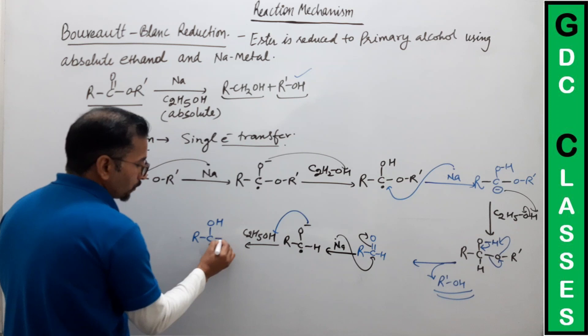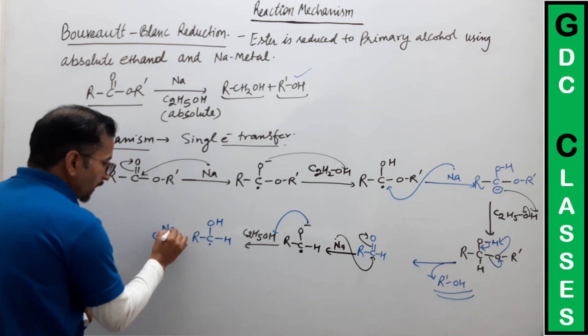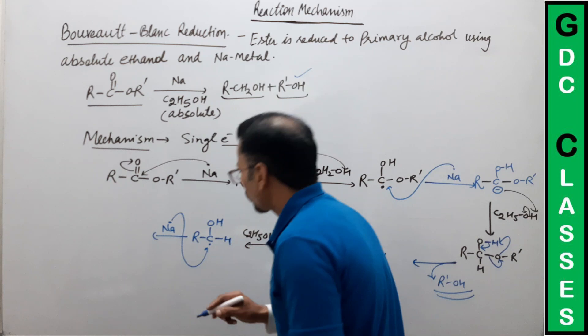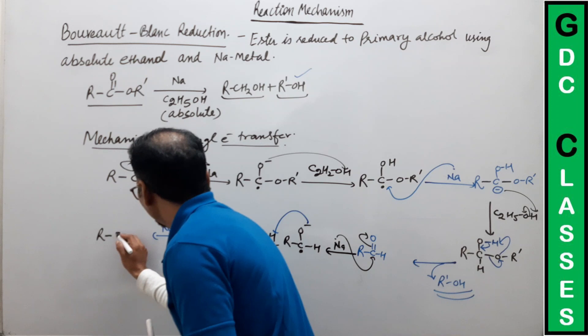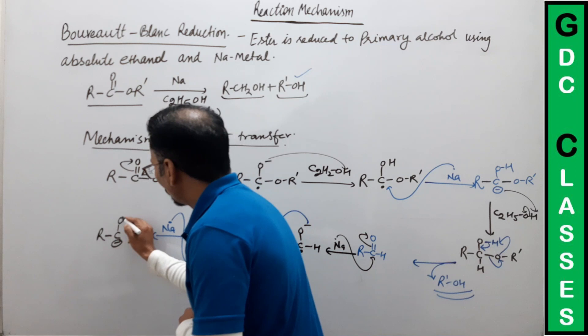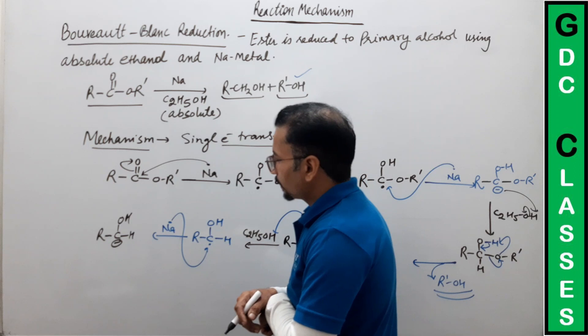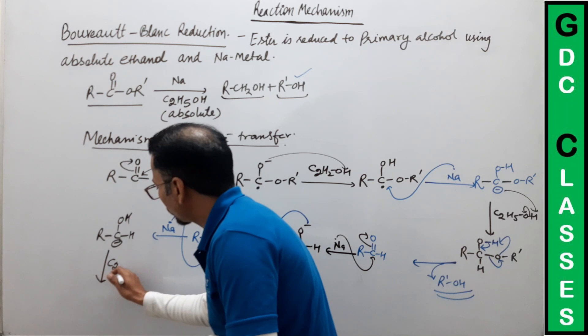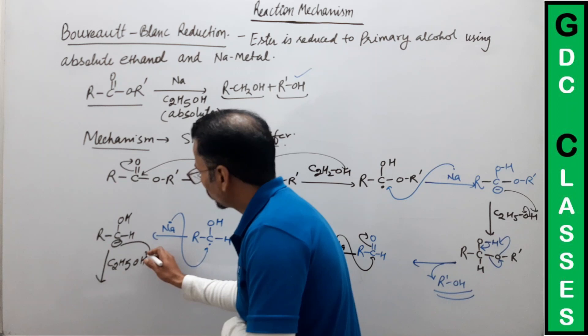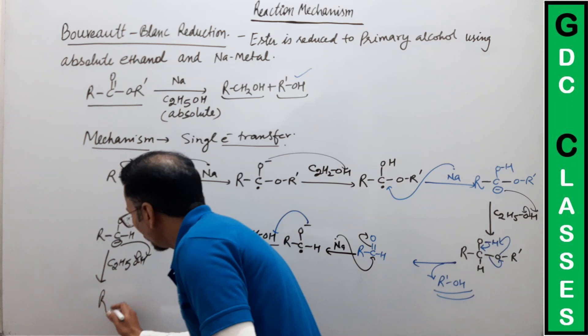अब फिर से sodium आएगा और इसको एक electron और देदेगा। Next compound बनेगा: R-C पर पूरा negative charge आ चुका है — यह O-H है और यह H हमारे पास है। फिर से C₂H₅OH proton देगा, यह bond टूट कर oxygen पर जाएगा और हमारे पास product बना — primary alcohol।